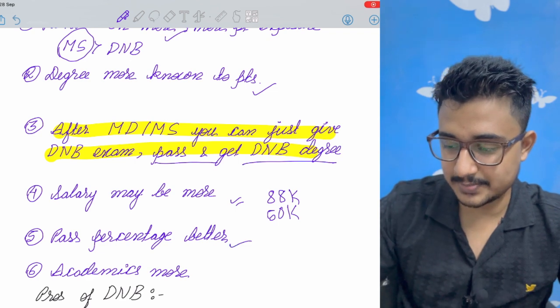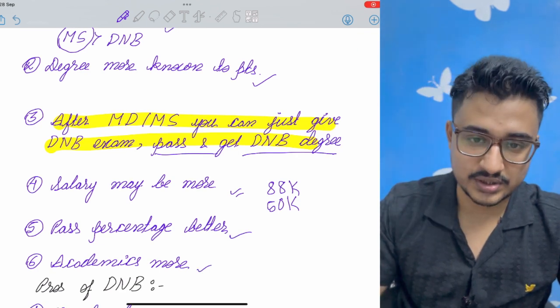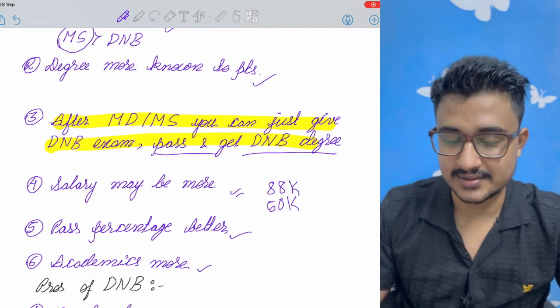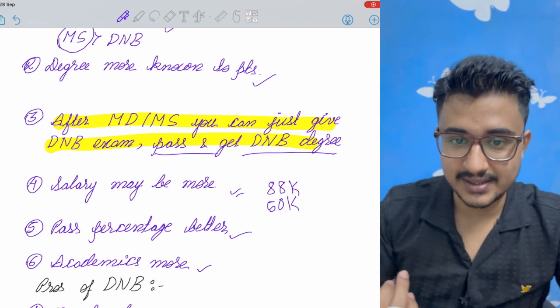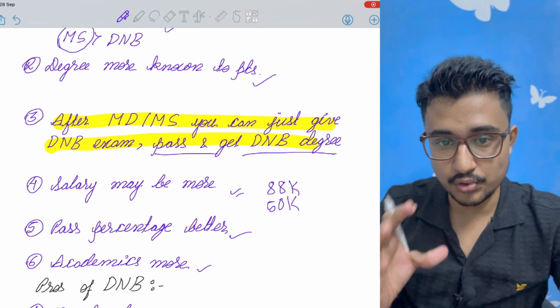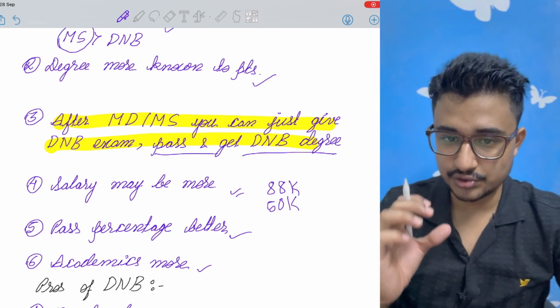Pass percentage is better in MD and MS and the academics is more like you have regular classes and case presentations. So the academics is much more than that of the DNB because in DNB it is rather than a clinical training center it is more of a patient treatment center. So you don't focus so much in academics there.